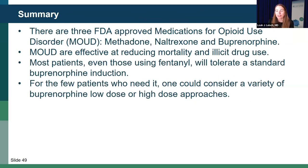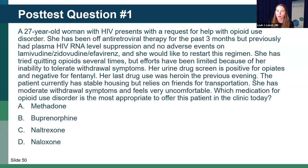In summary: there are three FDA-approved medications for opioid use disorder — methadone, naltrexone, and buprenorphine. MOUD is effective at reducing mortality and illicit drug use. Most patients, even those using fentanyl, will tolerate a standard induction with buprenorphine. For the few patients who need it, one could consider a variety of buprenorphine low-dose or high-dose approaches.